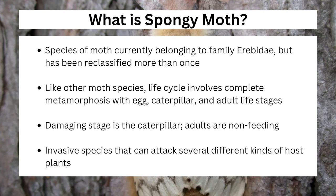The primary stage that we are concerned about when it comes to damage is going to be the caterpillar. The adults are non-feeding — they only live to reproduce and then die shortly after. This particular invasive species is a great representation of why invasive species are bad. It can attack several different kinds of host plants and be successful on them. Here in Indiana, we will see them be the most voracious on oak, but it can go to several species of trees.